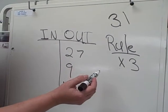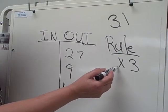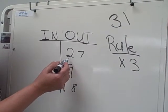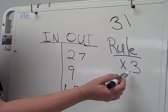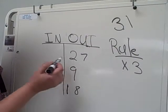Basically, to find this information out, instead of multiplying 27 by 3, we need to divide. We need to do the opposite of what the rule tells us to do to find the in.